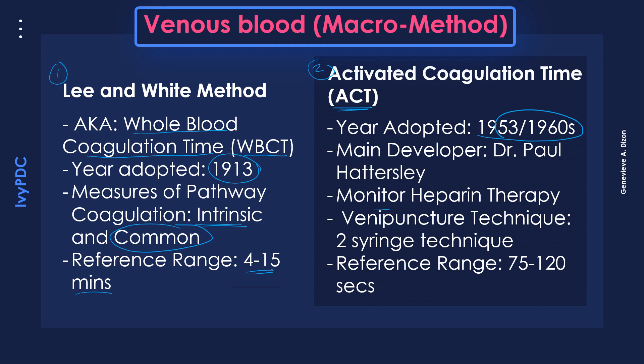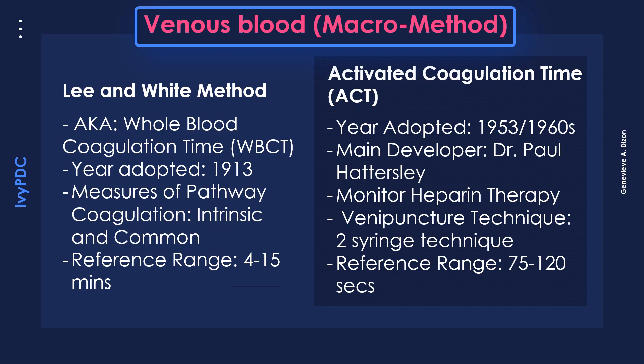The ACT, or activated coagulation time, was adopted later than the Lee and White method. It is used to monitor heparin therapy and uses a two-syringe technique for venipuncture. The reference range for this method is 75 to 120 seconds.